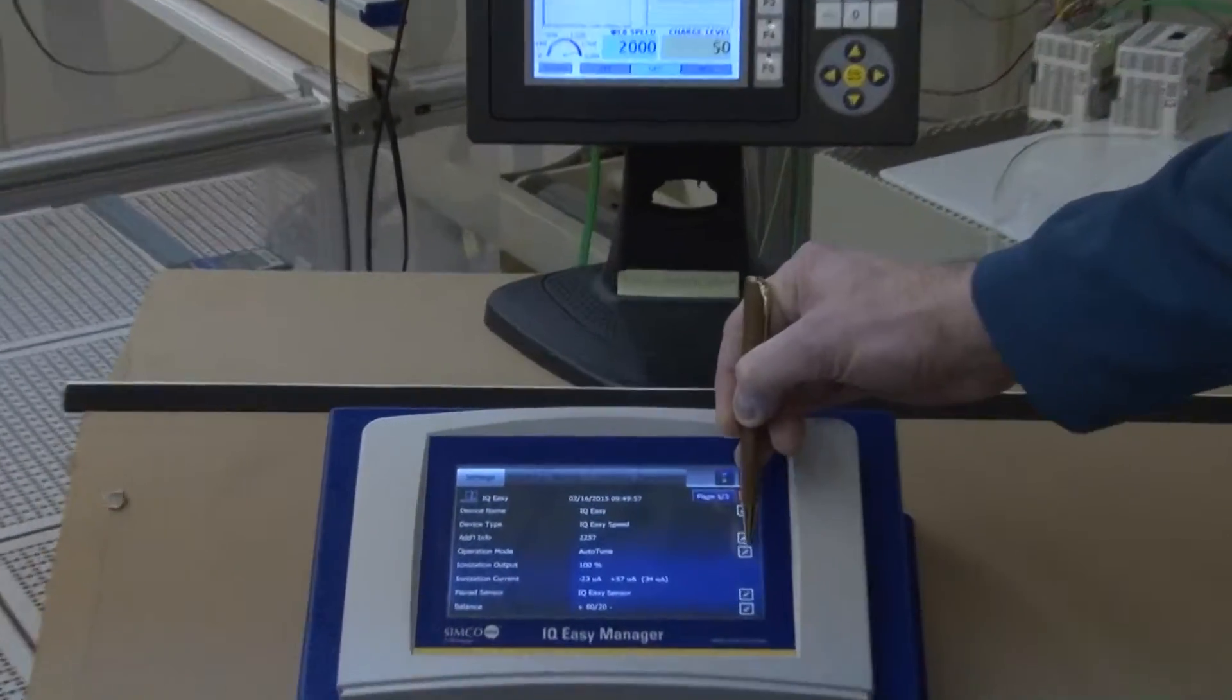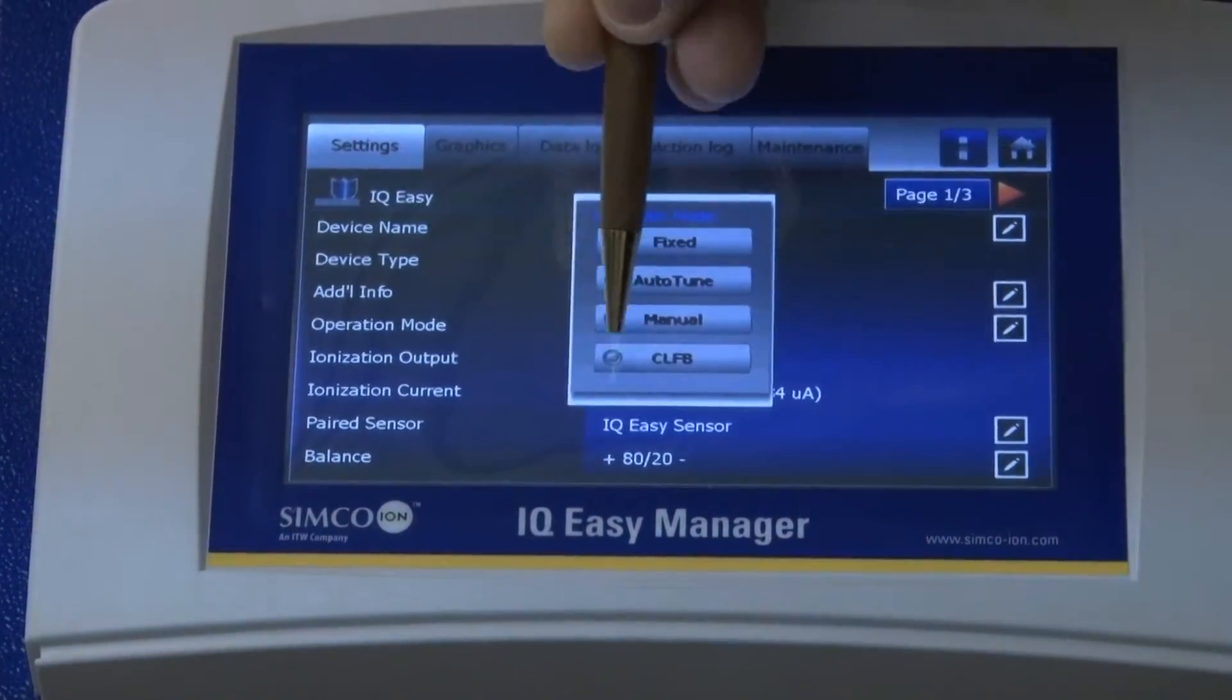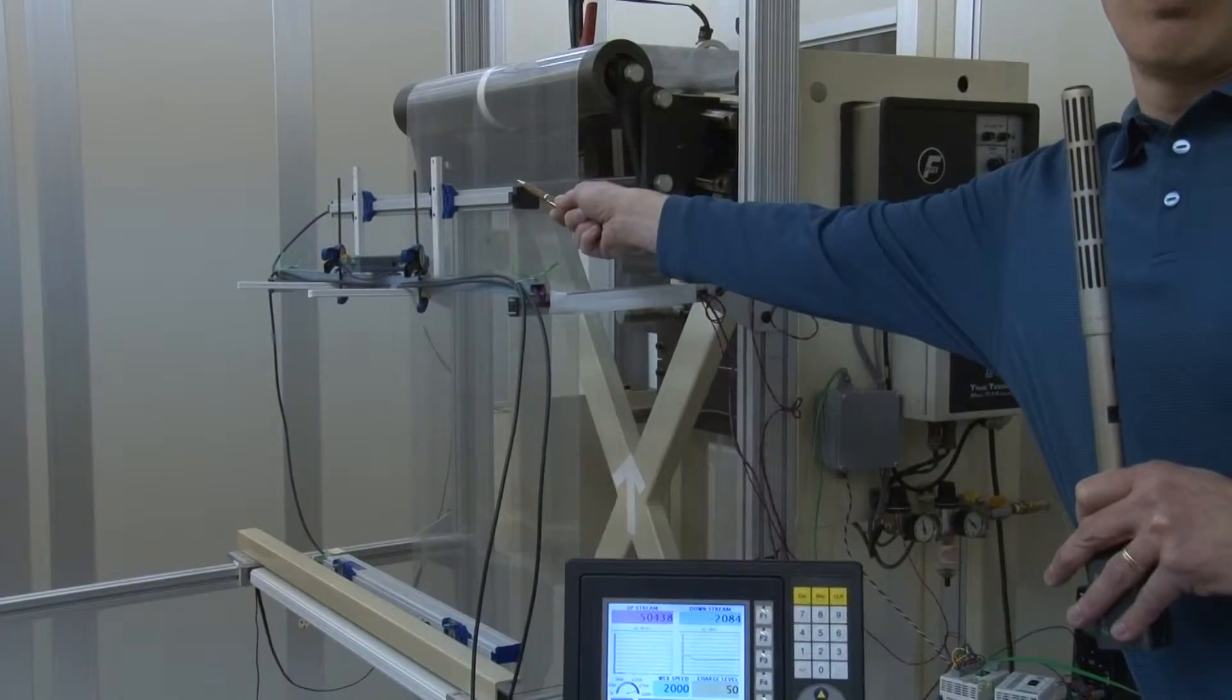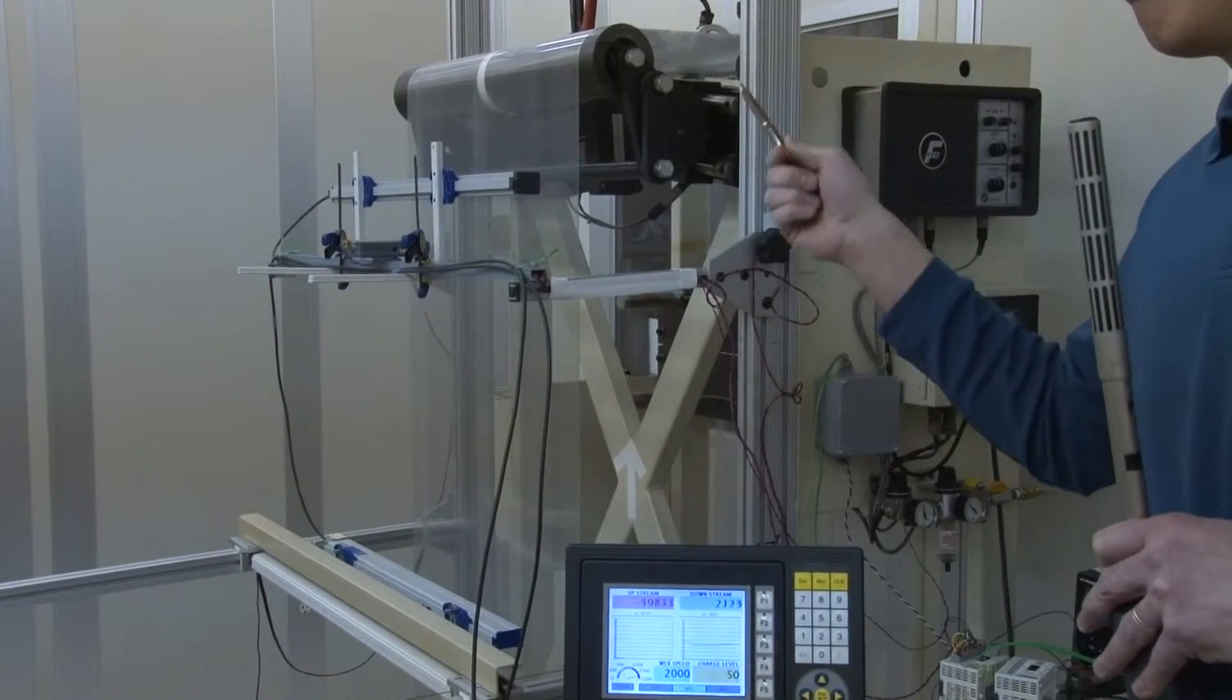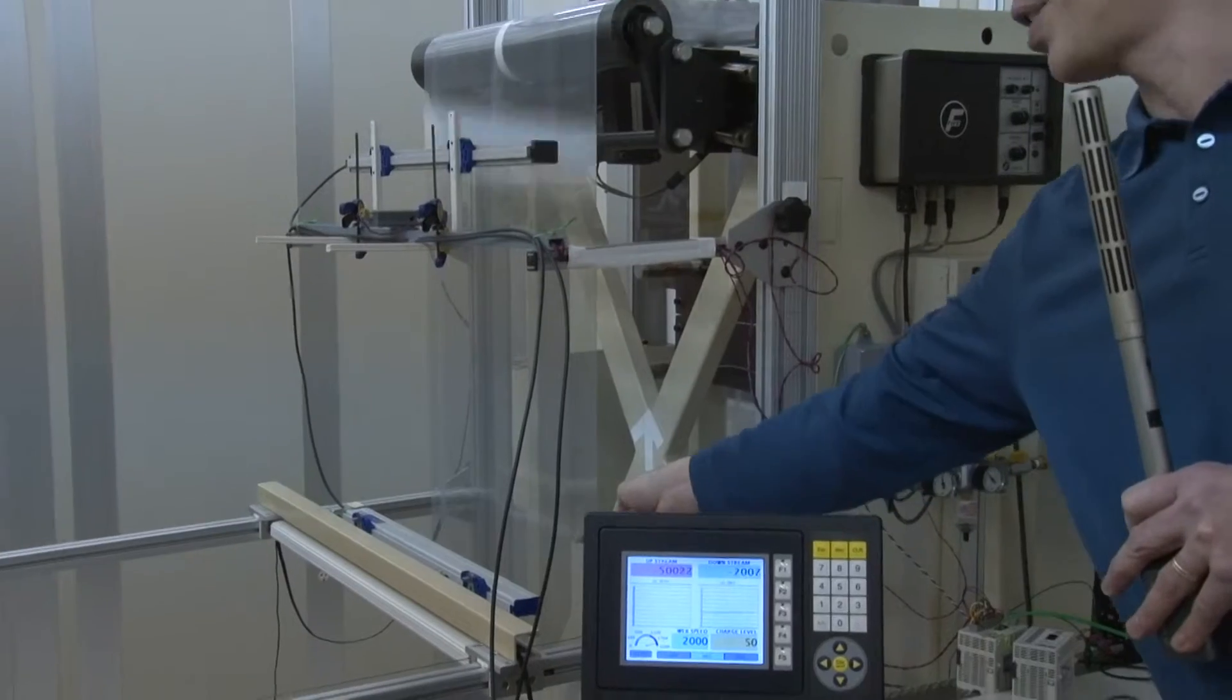So again, we go into the neutralizing bar mode, and instead of auto-tune, this time we'll pick closed-loop feedback. Okay, in the closed-loop feedback mode, data from the sensor bar will be transmitted to the neutralizing bar, which allows the static neutralization to be optimized based on the sensor reading.